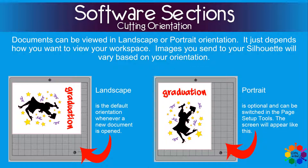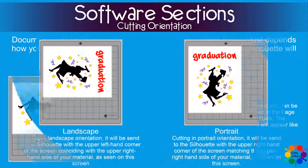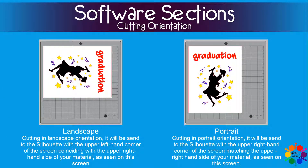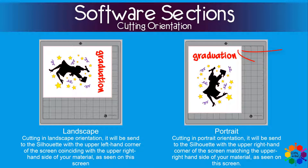Then the screen will appear like this. Cutting in landscape orientation will be sent to the Silhouette with the upper left hand corner of the screen coinciding with your upper right hand side of your material, as you can see above. Cutting in portrait orientation will be sent to the Silhouette with the upper right hand corner of the screen matching the upper right hand side of your material.